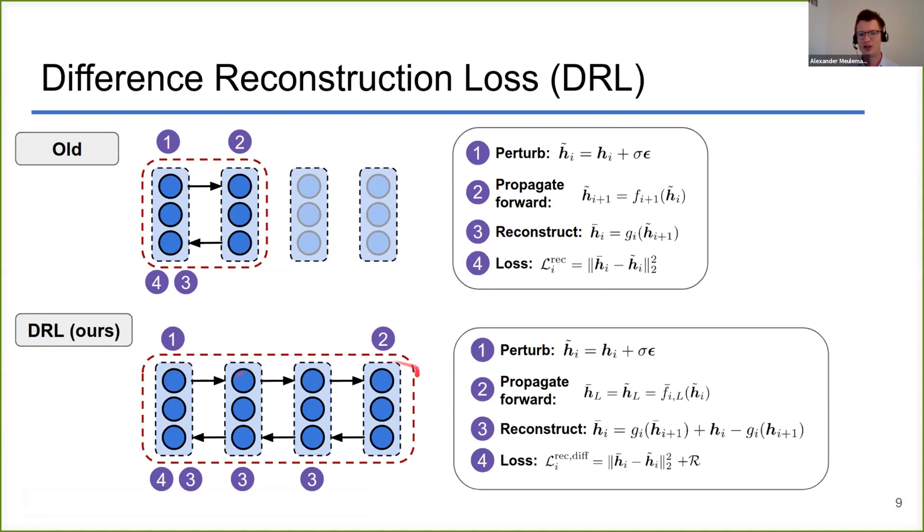The main differences with the old reconstruction loss is that now we use a wider reconstruction loop, so we send the signal all the way to the output and then backwards again. We also use in the reconstruction the same correction term that difference target propagation uses for these targets. Note that difference target propagation only uses this correction term for propagating targets for training the forward weights, but now we also use this correction term in the reconstruction loop for training the feedback weights.